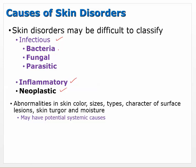Infectious can be broken down to bacterial, fungal, or parasitic, and then we'll get into some of the inflammatory a bit later. Skin disorders involve abnormality in skin color, sizes, types, character of surface lesions, skin turgor and moisture, and they could have potential systemic causes. We've seen that with things like inflammation of the gallbladder, hepatic problems, or even renal problems.